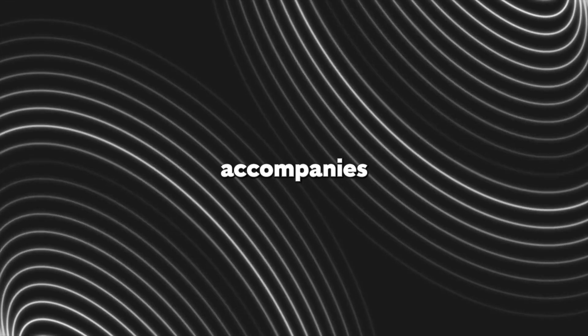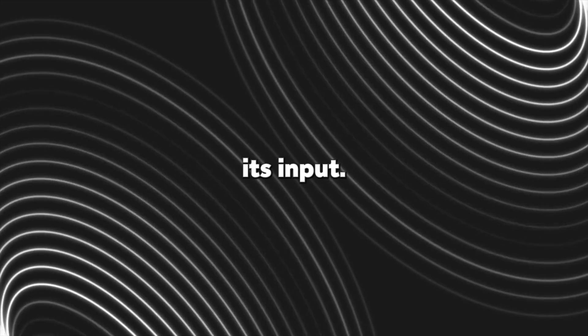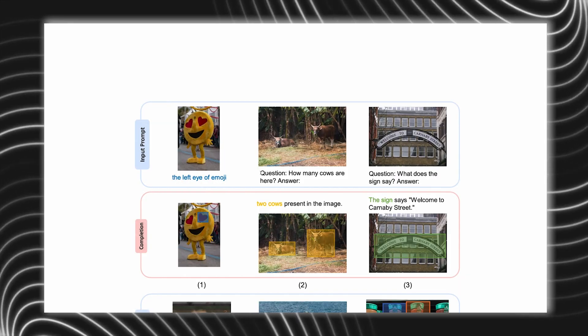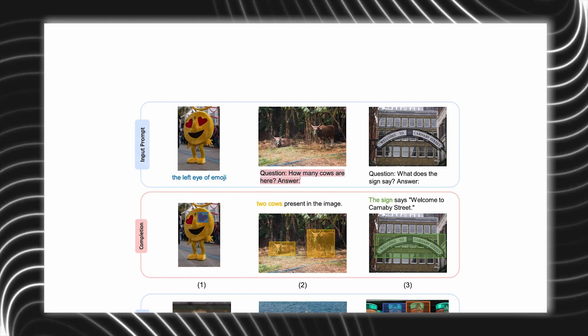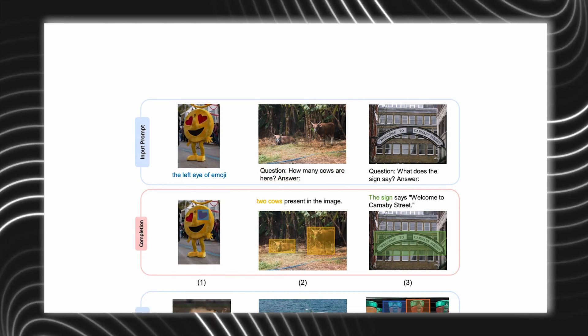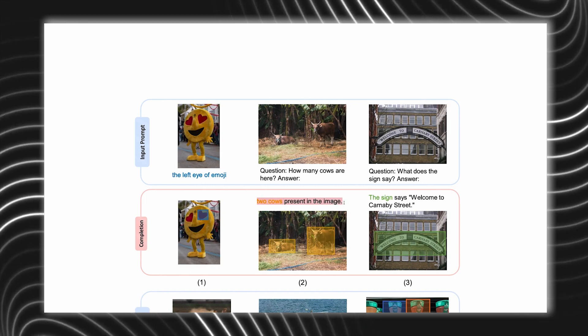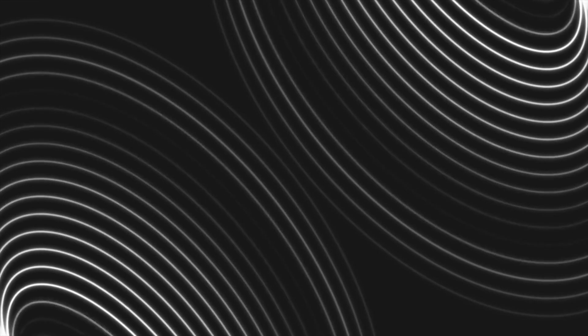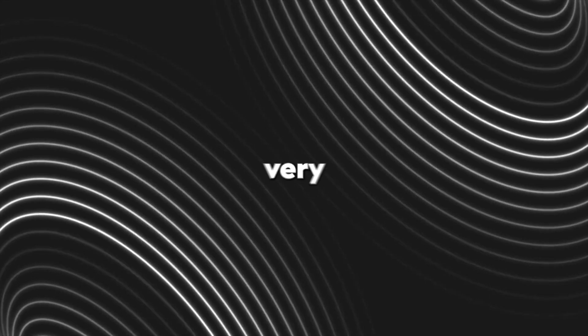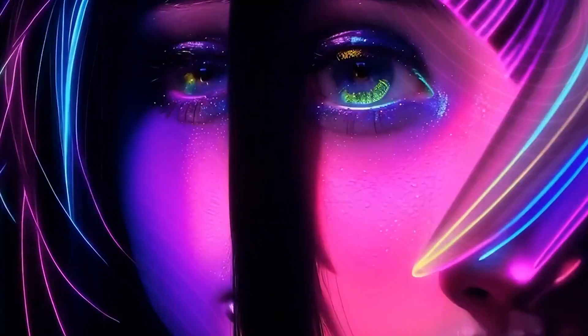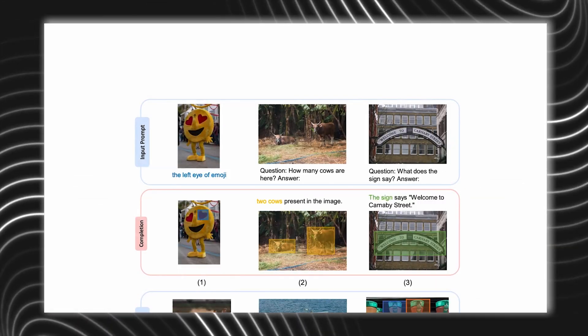The model has been given a few images with a prompt that accompanies it as its input. The first one asks the model to locate the left eye of the emoji, to which the model lays a bounding box over it. This is pretty impressive, as the emoji doesn't even have a traditional eye — its eyes are hearts instead of the normal human kind.